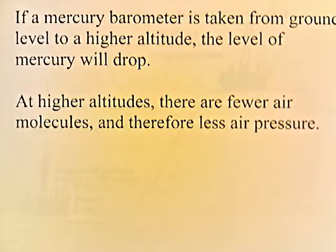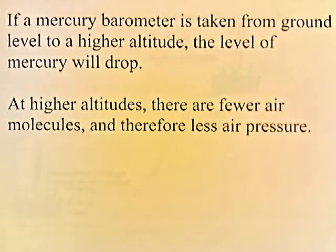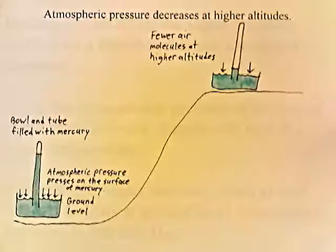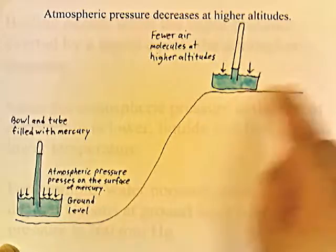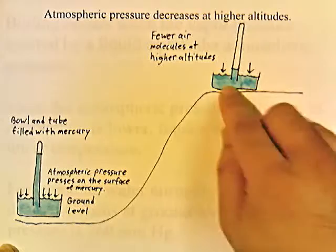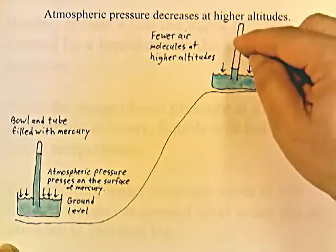If a mercury barometer is taken from ground level to a higher altitude, the level of mercury will drop. At higher altitudes, there are fewer air molecules and therefore less air pressure. At the bottom of a mountain there are more air molecules, so there's more air pressure pushing on the surface of the liquid mercury, keeping the level in the tube up. As you go to a higher altitude, there are fewer molecules, so there's less air pressure pushing on the surface of the liquid mercury in the bowl. As a result, there's not enough pressure to keep the level in the tube up, and some of the mercury goes down. Air pressure decreases at higher altitudes.